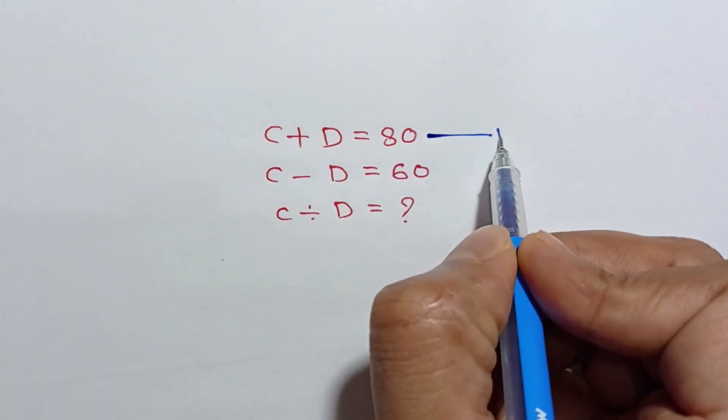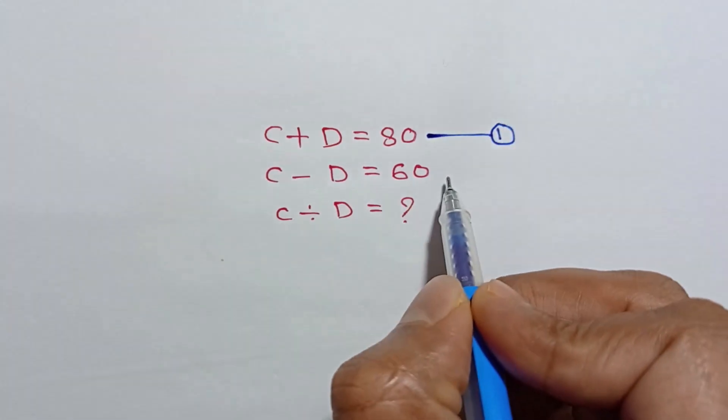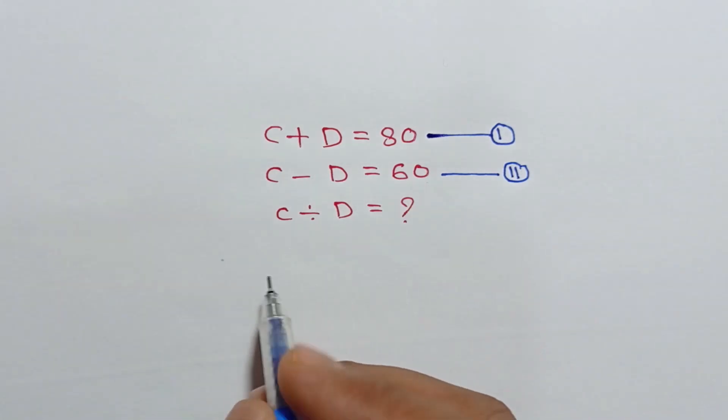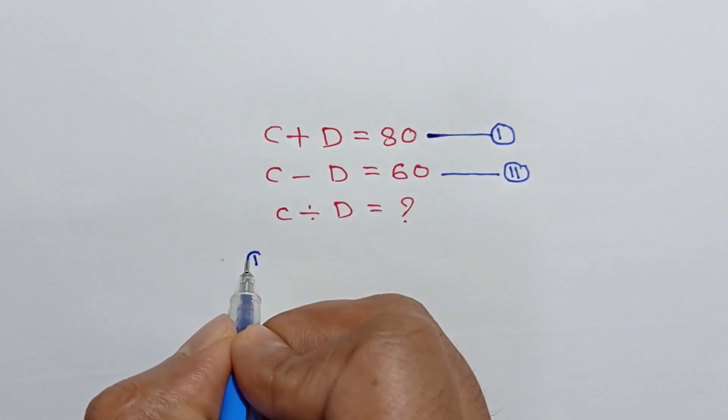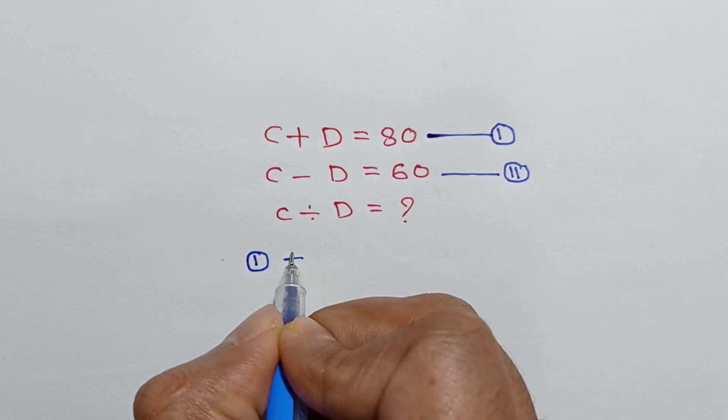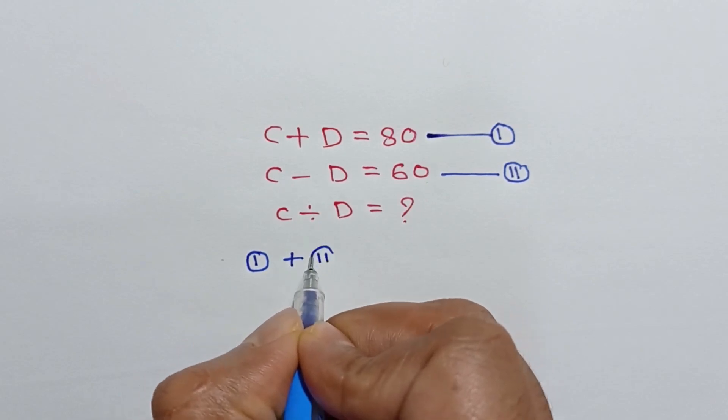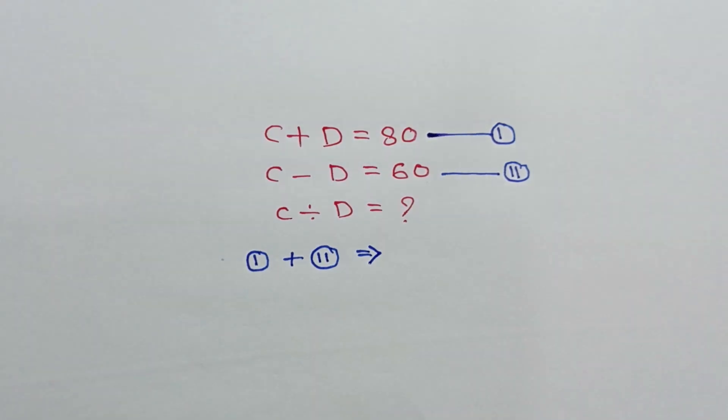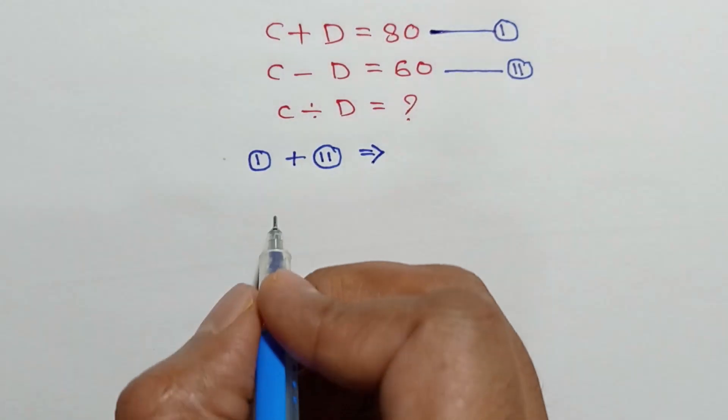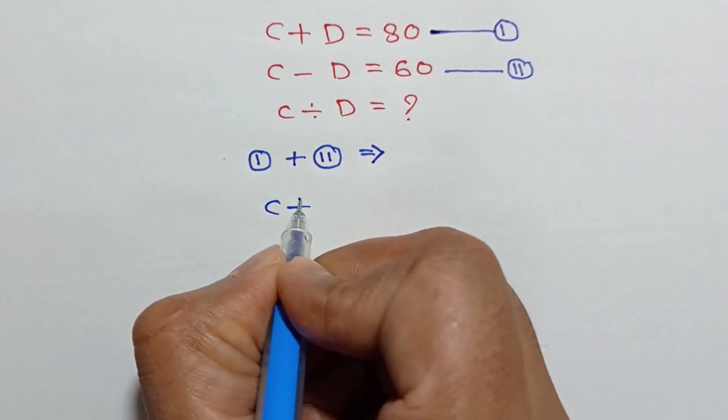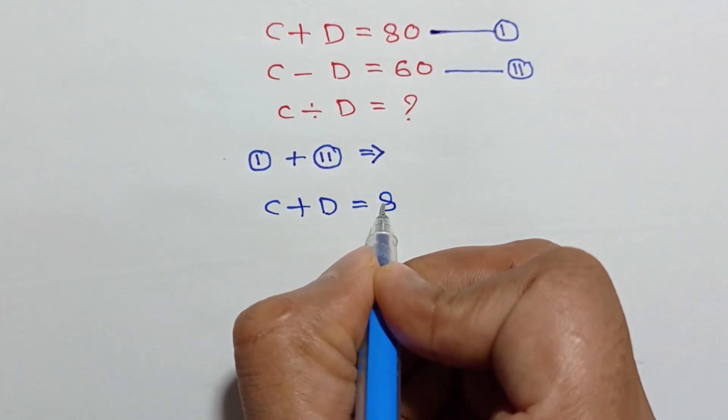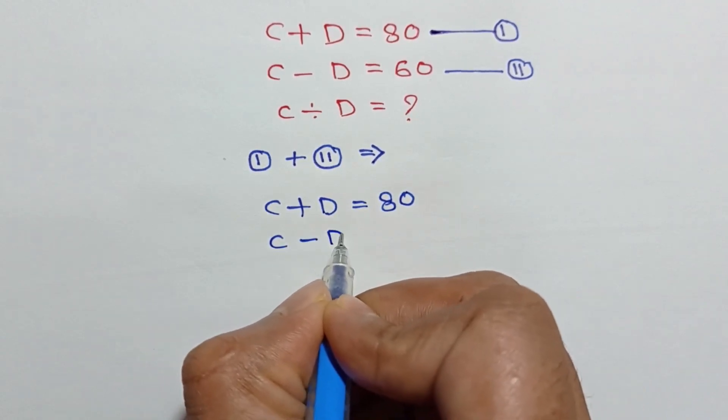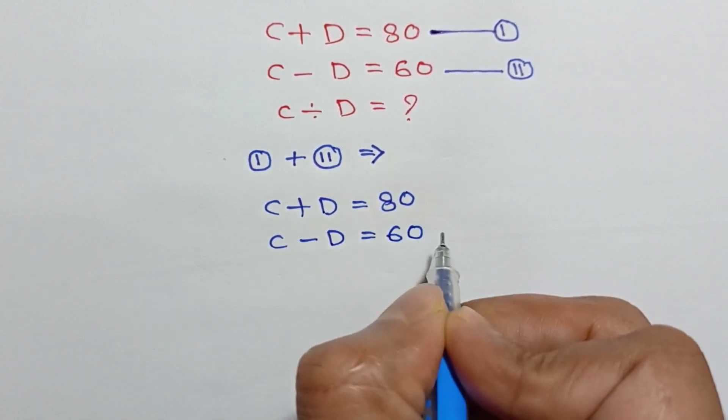Let's call it equation number one and this equation number two. If we add equation one and equation two, we will have C plus D is equal to 80, C minus D is equal to 60.